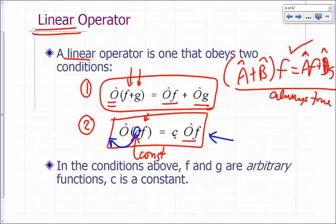So if both of these conditions are satisfied — if both of these are true — then you say that the operator is a linear operator.